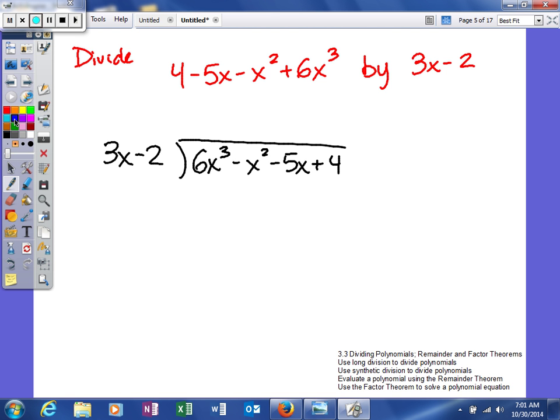So I've already set up the problem. As you can see, if I'm missing a place value I need to make sure that I hold it somewhere, but this is linear and this is your constant. So here you have a third degree, second degree, first degree, and then a degree of zero. I'm not missing any place values, so that's good.